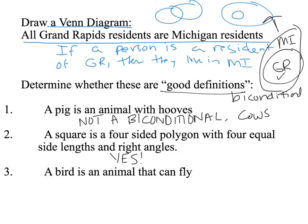The last one: a bird is an animal that can fly. If the animal is a bird, then it can fly — and the converse, if it can fly, then it is a bird. We already said this was a bad definition, because chickens can't fly. So you can't say just because it's a bird it can fly.